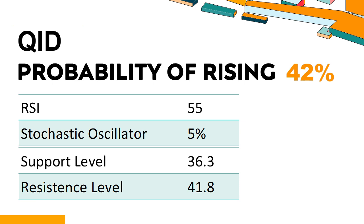The current stochastic oscillator of QID is 5%. When the indicator falls below the 20 level, it is usually considered oversold, indicating that a price rebound or recovery is likely for the stock. An oversold condition occurs when the stock price falls too fast and too much in a short period of time, which may indicate that the selling pressure has exhausted.